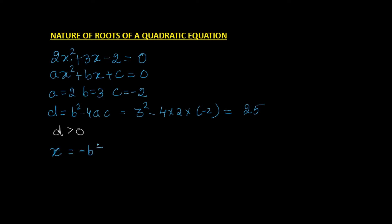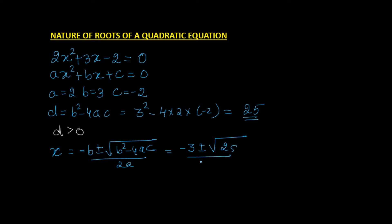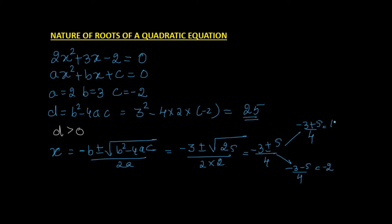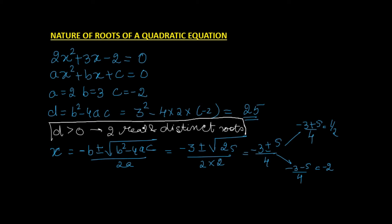Applying the quadratic formula x = (−b ± √(b² − 4ac)) / 2a, we substitute to get (−3 ± √25) / 4 = (−3 ± 5) / 4. This gives us two values: (−3 + 5)/4 = 1/2 and (−3 − 5)/4 = −2. When D is greater than 0, we get two real and distinct roots. Distinct means different.